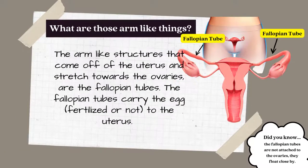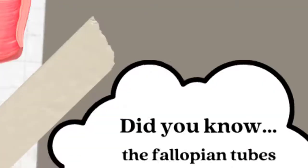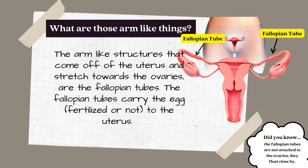The arm-like structures that come off of the uterus and stretch towards the ovaries are the fallopian tubes. The fallopian tubes carry the egg — fertilized or not — to the uterus. Did you know the fallopian tubes are not attached to the ovaries? They float close by.